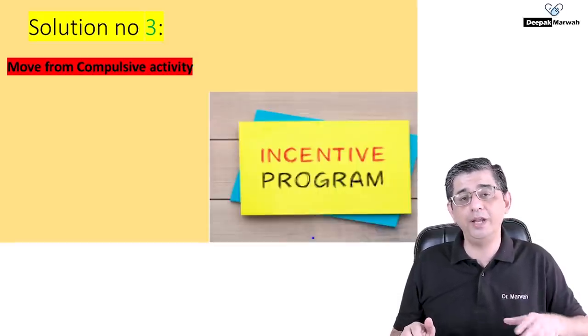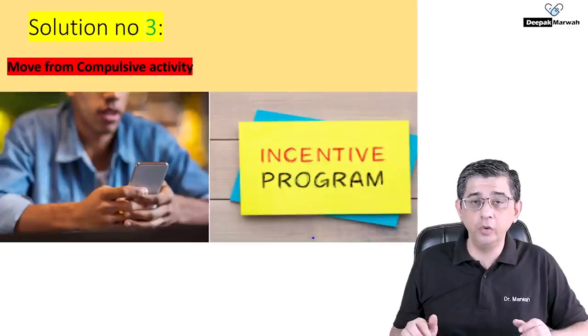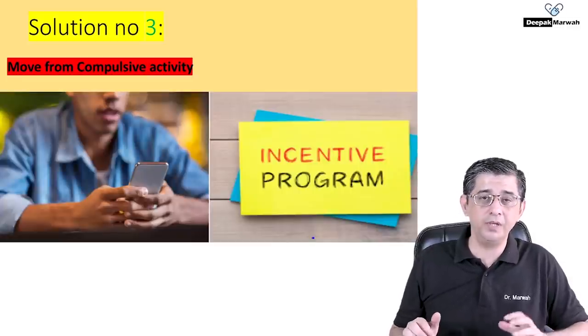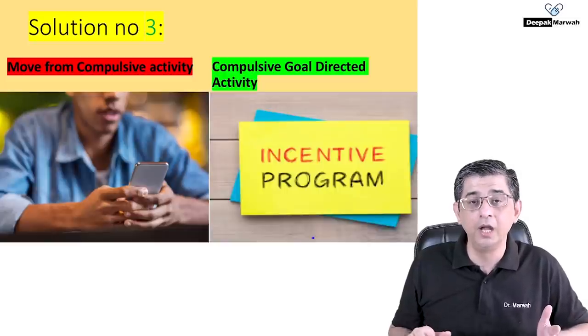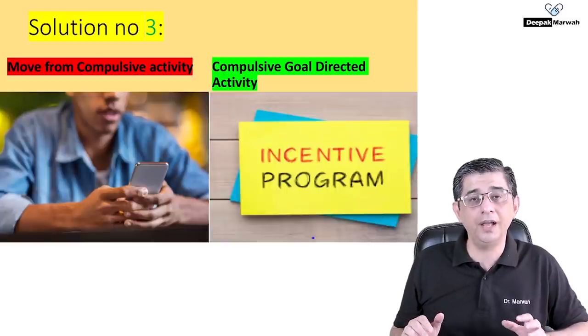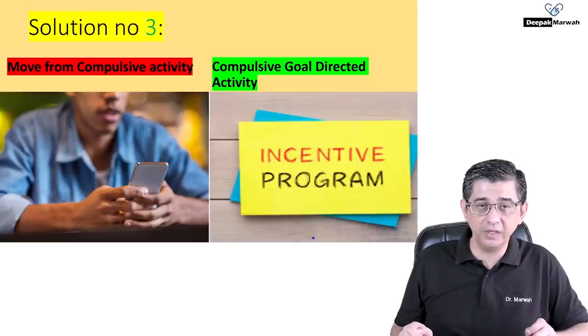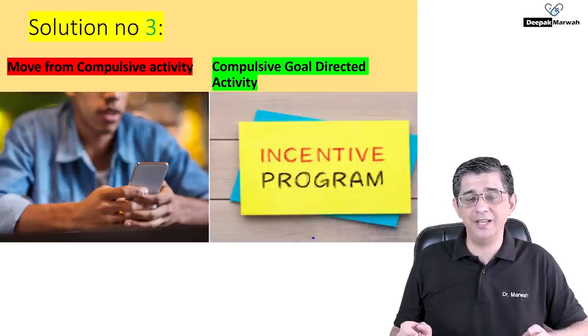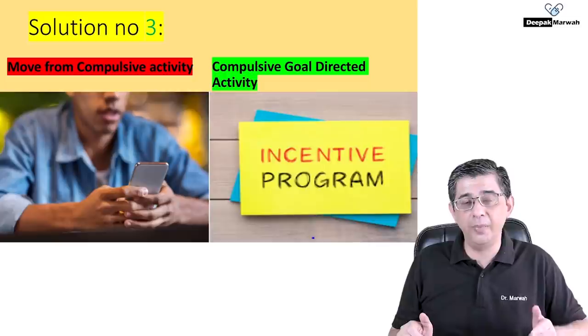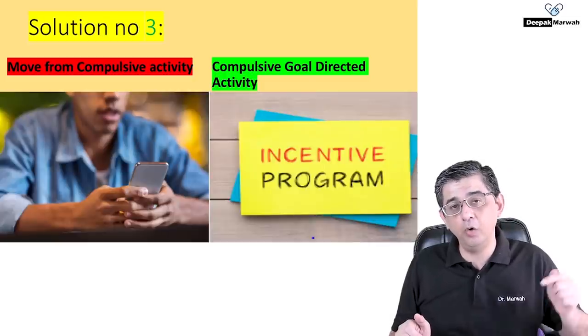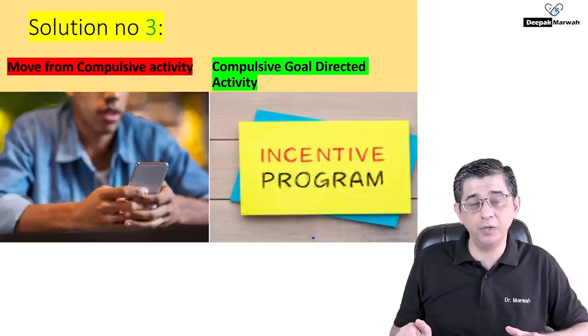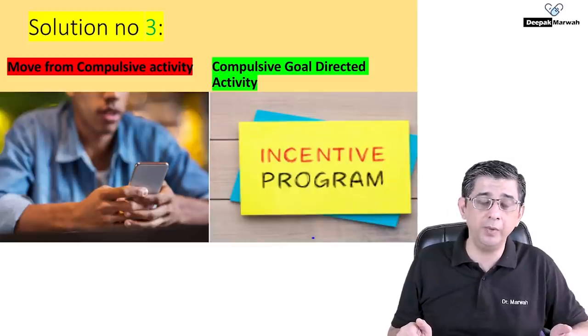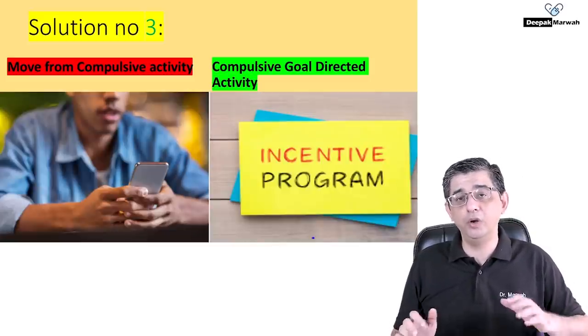So you need to move from compulsive activity. Compulsive activity would be something like playing a video game or just scrolling on the internet to a goal-directed activity. Mark my words there, guys. I said two simple things: compulsive activity to goal-directed activity. And how would you come to that step? Three is by starting with point number one or the solution number one that I gave you, starting from a timetable to ensuring the fact that you are not on a very comfortable chair, and then start doing things on a daily basis.